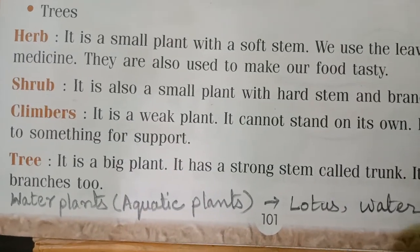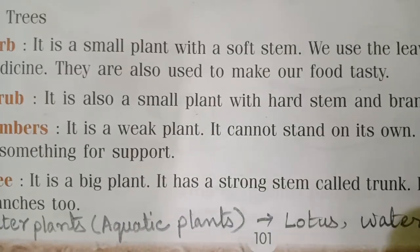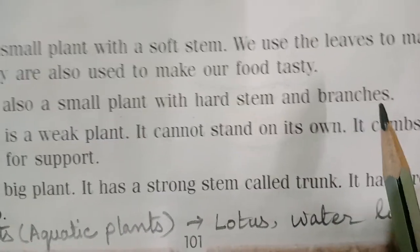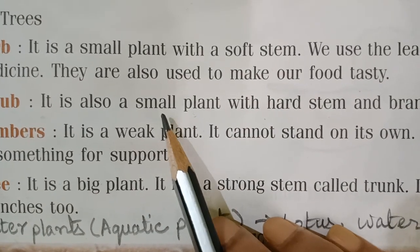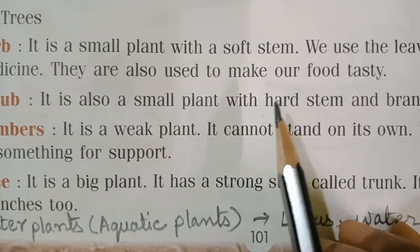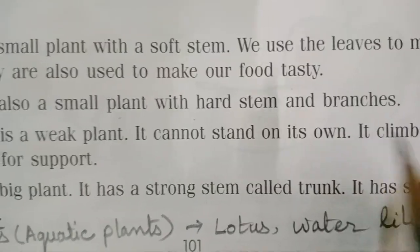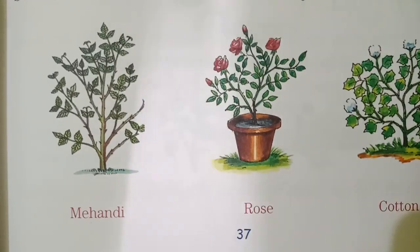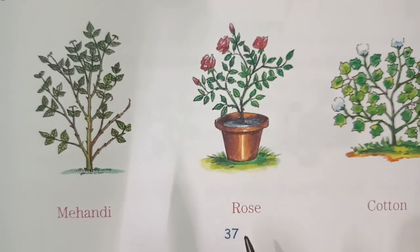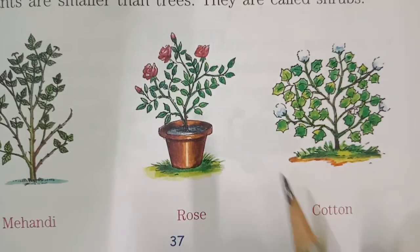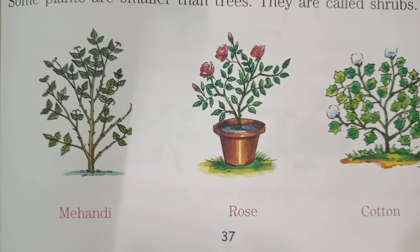Shrubs — it is a small plant with hard stem and branches. Small plant but with hard stem and branches. Like mehndi, rose, and cotton plant. All these are shrubs.